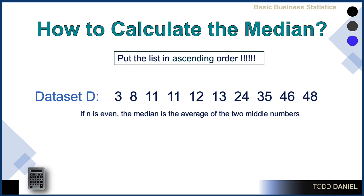In data set D, however, we have an even number of scores. In this case, the median is the average of the two middle numbers, and so we find that the median value is between 12 and 13. If both numbers were 12, we would simply report the median as 12. But because the median falls between 12 and 13, we average those two scores and report the median as 12.5.